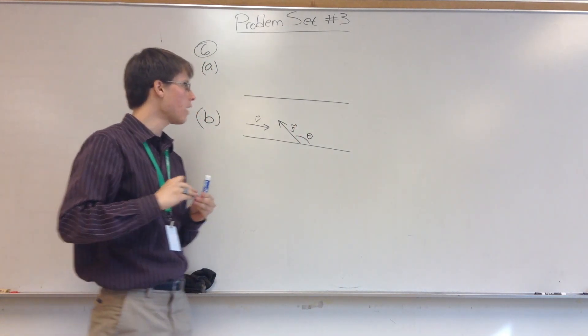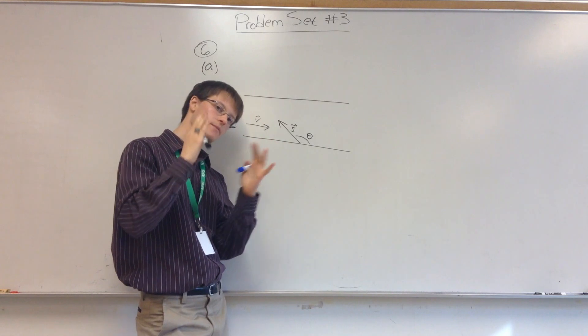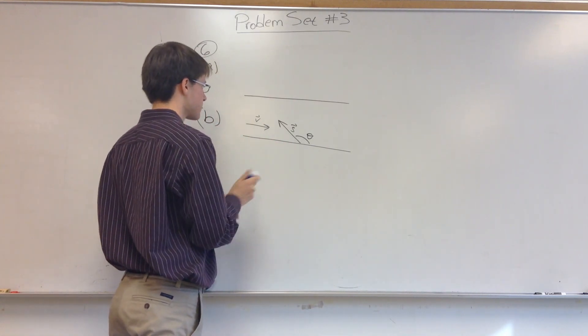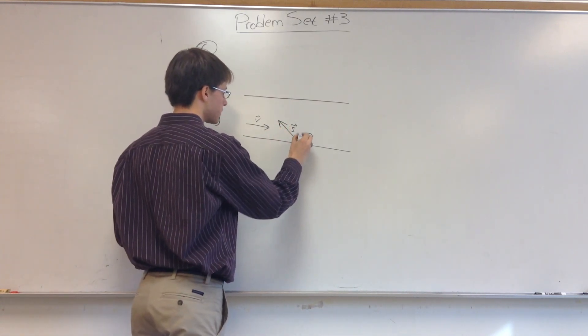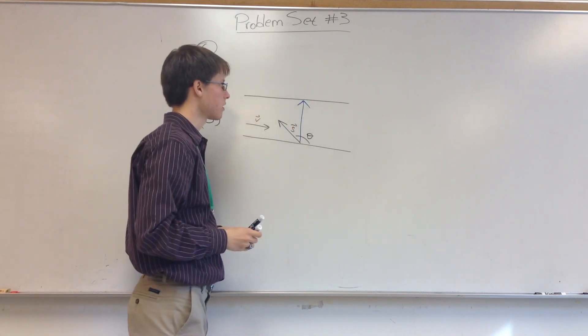But the problem is, how do we get straight across? There has to be some special angle where these two things together will produce a vector that looks like that, and it goes straight across.